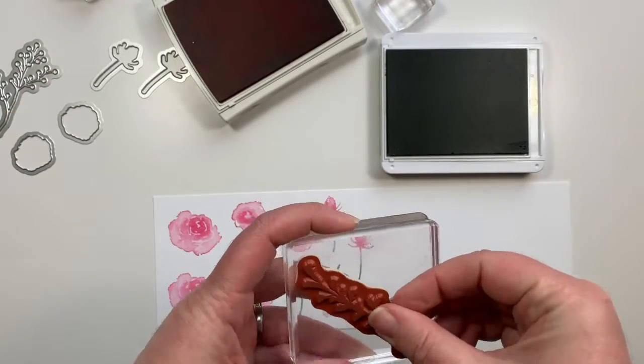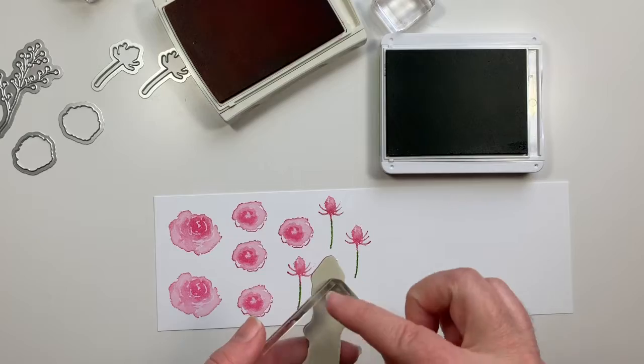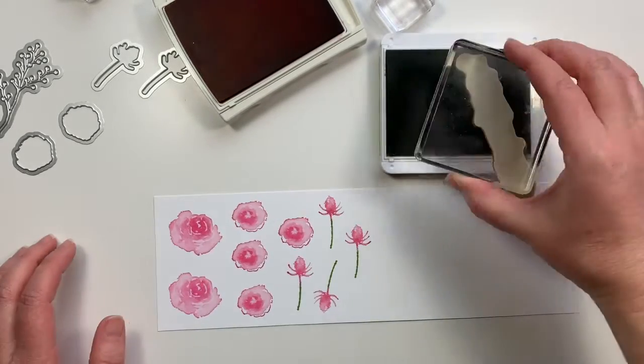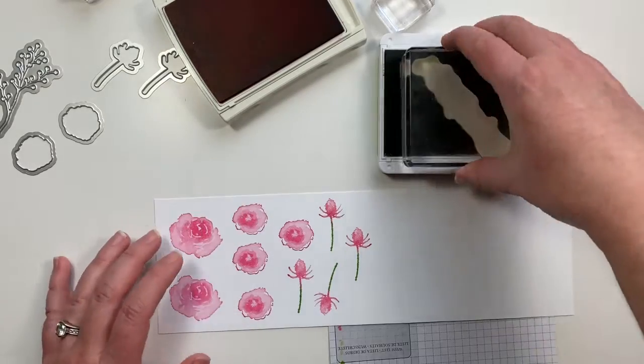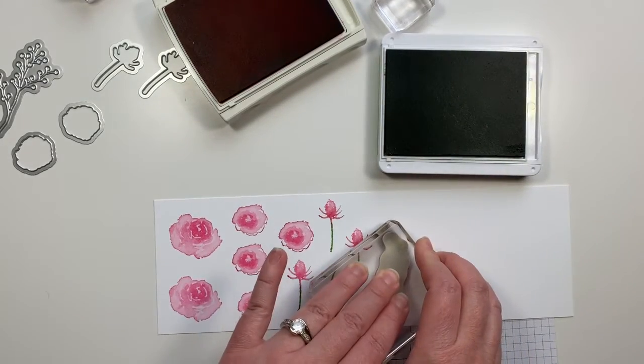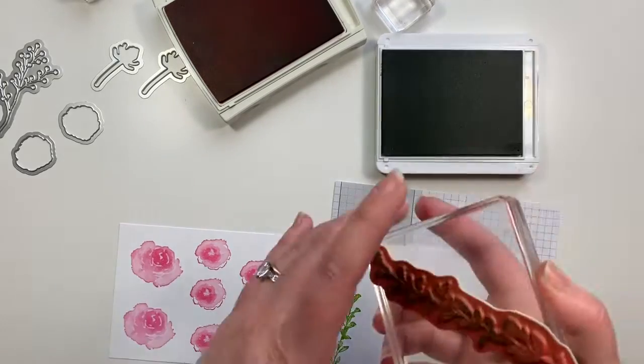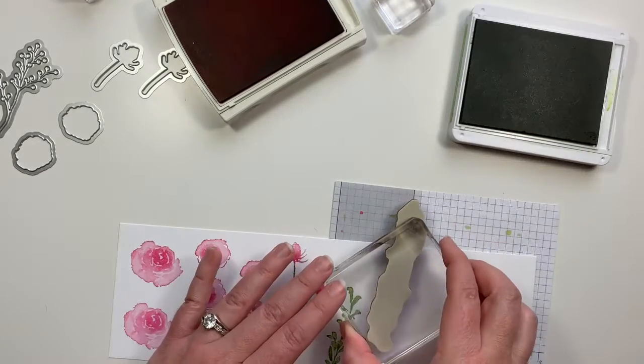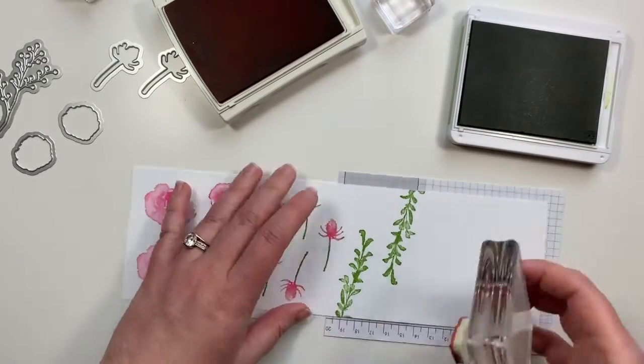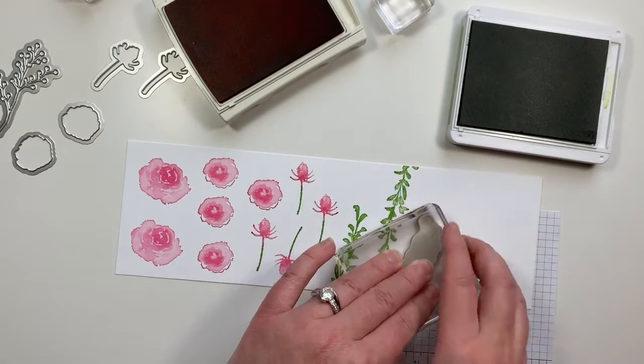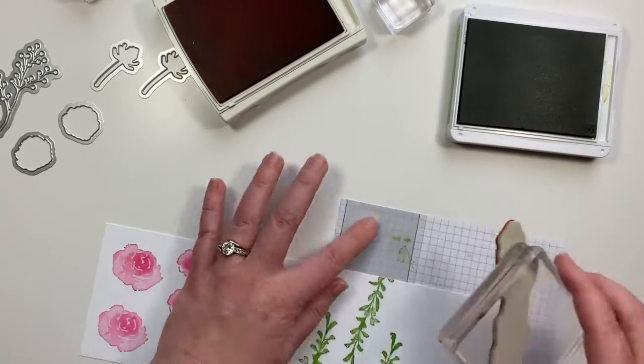And last but not least we're going to take that vine of leaves and it's okay that it hangs off the block because we really only need the top portion of this, the whole thing isn't going to go onto the card. So I'm stamping it off onto a scrap piece of paper where it overhangs and I'm just going to be cutting all of these shapes out on the Big Shot. And if you're making one card you need three of these green pieces.